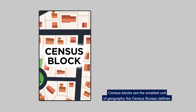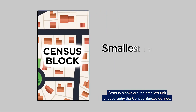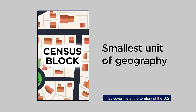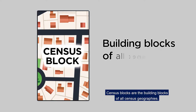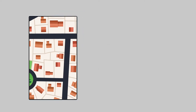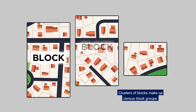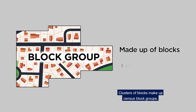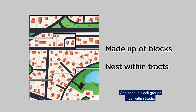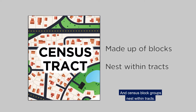Census blocks are the smallest unit of geography the Census Bureau defines. They cover the entire territory of the U.S. Census blocks are the building blocks of all census geographies. Clusters of blocks make up census block groups, and census block groups nest within tracts.